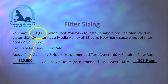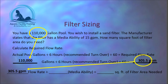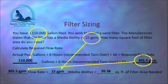We require a flow rate of 305.5 gallons per minute to achieve a 6-hour turnover on a 110,000-gallon pool. Next, we take that 305.5 gallons per minute and divide it by the 15 gallons per minute the manufacturer states this sand filter can handle. 305.5 divided by 15 equals 20.36 square feet of filter area. We require 20.36 square feet of filter area to handle the 305.5 gallon per minute flow rate for a 6-hour turnover.